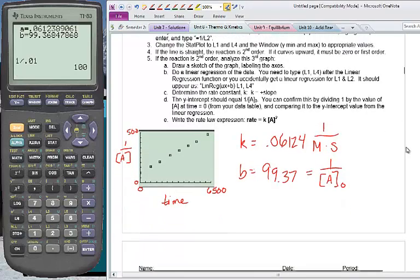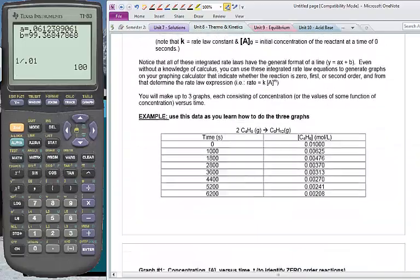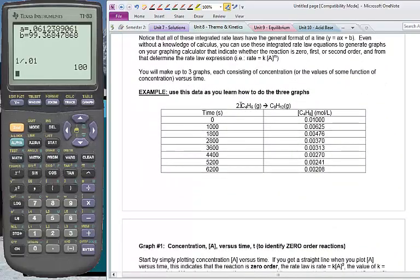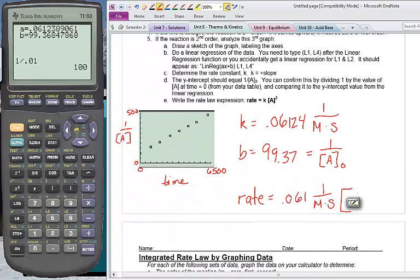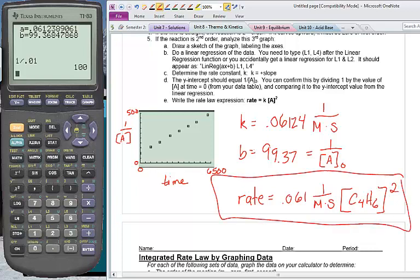Our final step is to write the rate law expression. So for this we'll say rate equals k, which is .061, 1 over molarity times seconds times, oh, you know what? I bet we know what this chemical is. Let's go back up to the very top. Are you getting seasick yet with all the scrolling? Yeah, our concentration chemical is C4H6. C4H6. So we do C4H6 and that would be to the second power. And that would be our answer. All that work just to get one tiny little chemical, well, one tiny little mathematical equation.